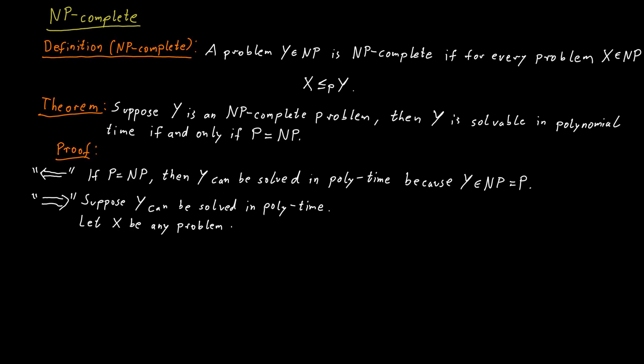So let X be any problem in NP. We know, because Y is NP-complete, that X polynomial time Karp reduces to Y. But then, if we can solve Y in polynomial time, we can also solve X in polynomial time. Because to solve X, we would simply take the input, feed it through our transformation that's given by the Karp reduction, and then solve the resulting instance for the problem Y.